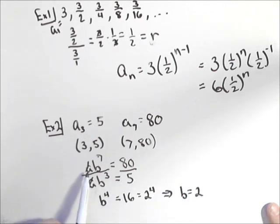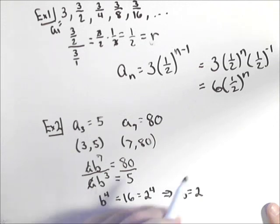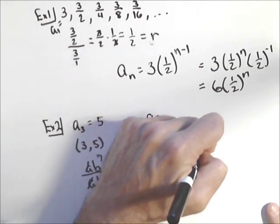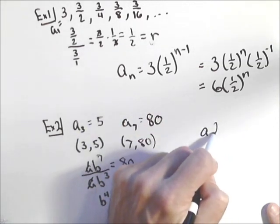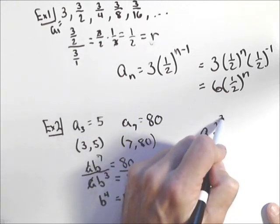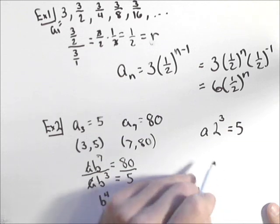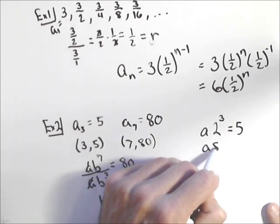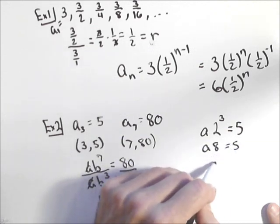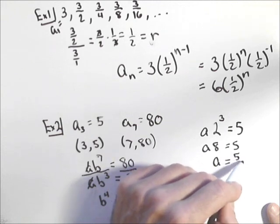One other thing we need is our a. We can plug it into either one to get our a. So we know that a times two cubed is equal to five. Or a times eight equals five. So a equals five-eighths.